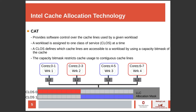CAT provides software control over the cache lines used by a given workload. A class of service is a resource group defined by a capacity bit mask that restricts cache usage to a contiguous set of cache lines. A workload is then assigned to at most one class of service, as seen in the figure below. Furthermore, multiple workloads can be assigned to a class of service to share the same set of cache lines.